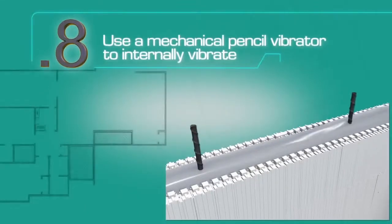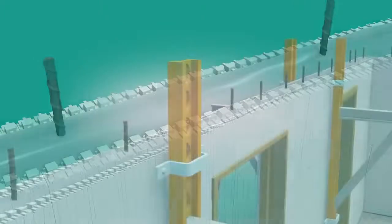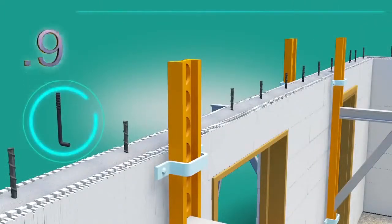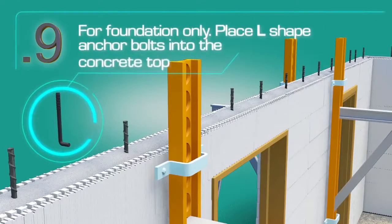Screed off the concrete until it is even with the block top and then wet-set anchor bolts into the concrete top. These bolts will be used later to install the top plate, or mud sill, for the installation of rafters or trusses.